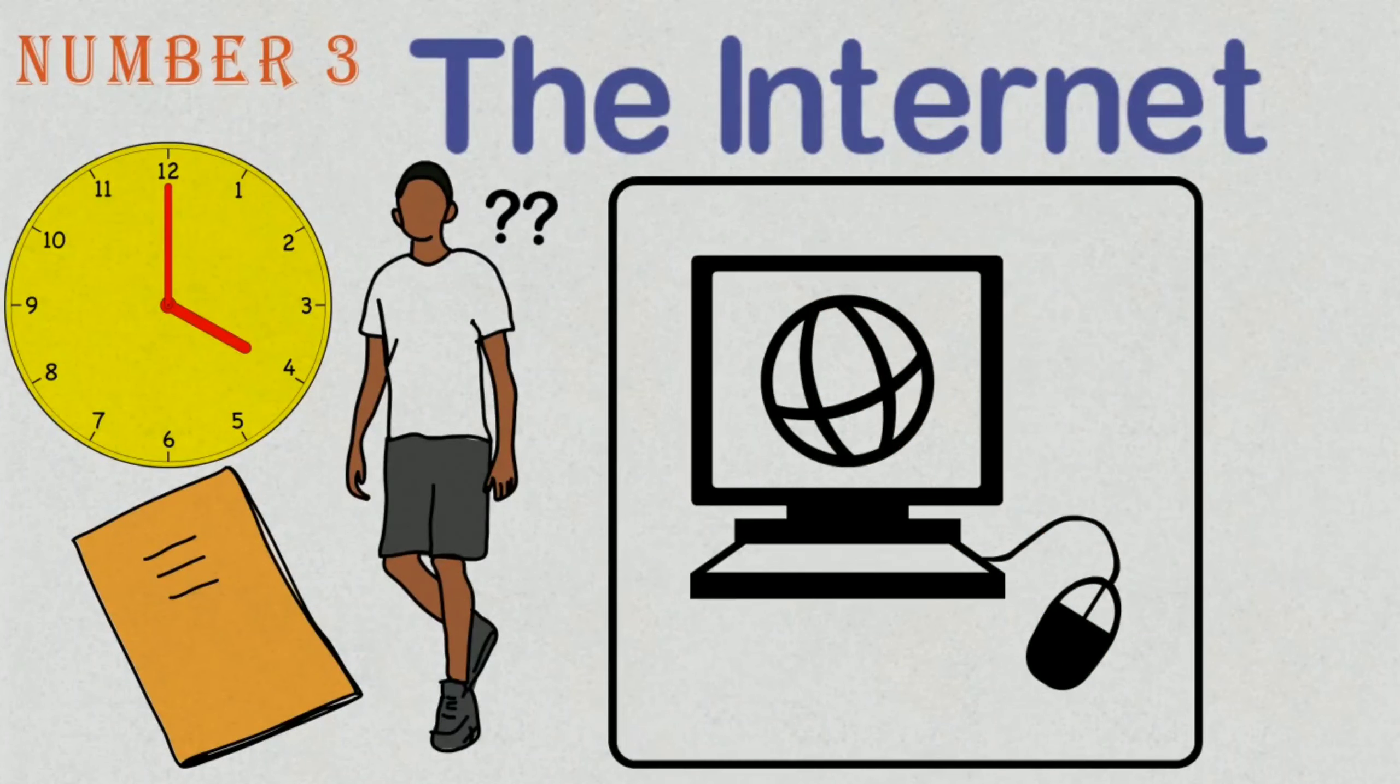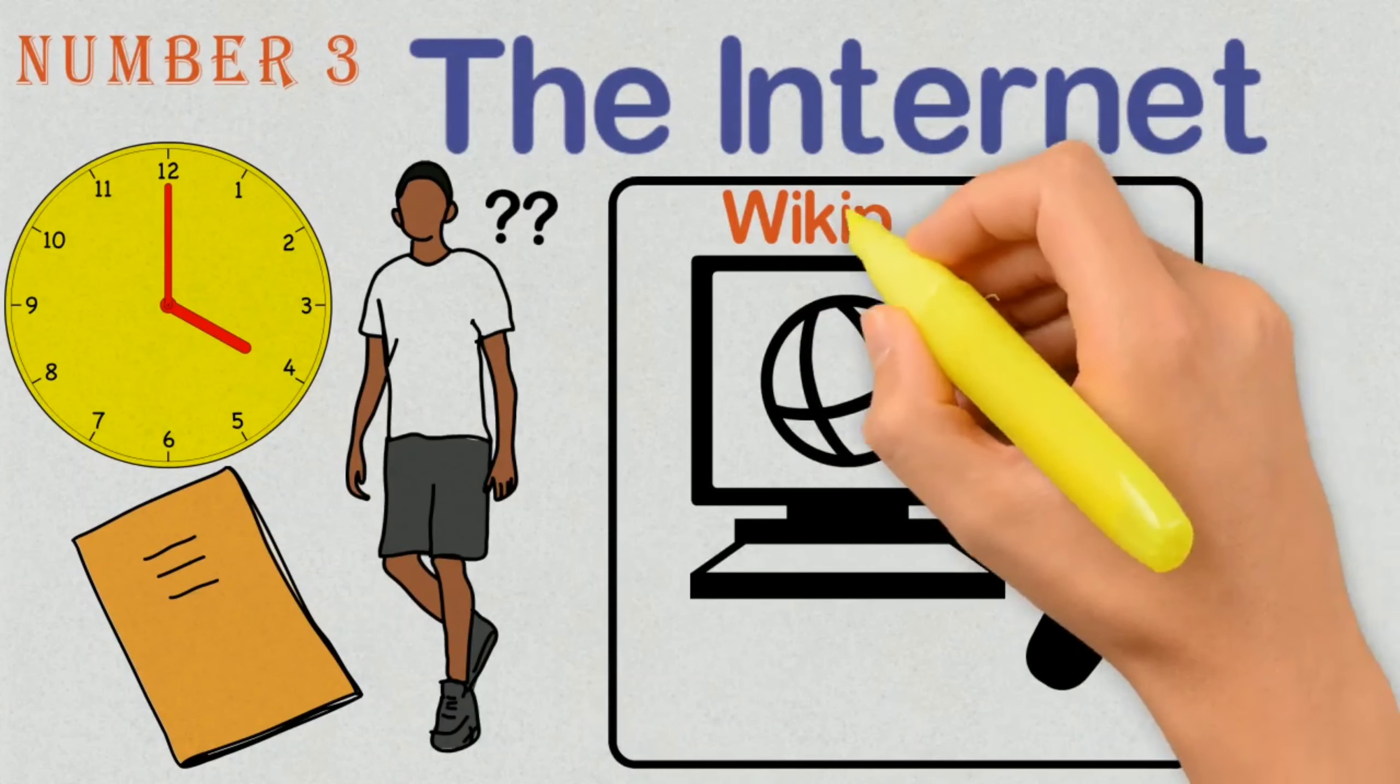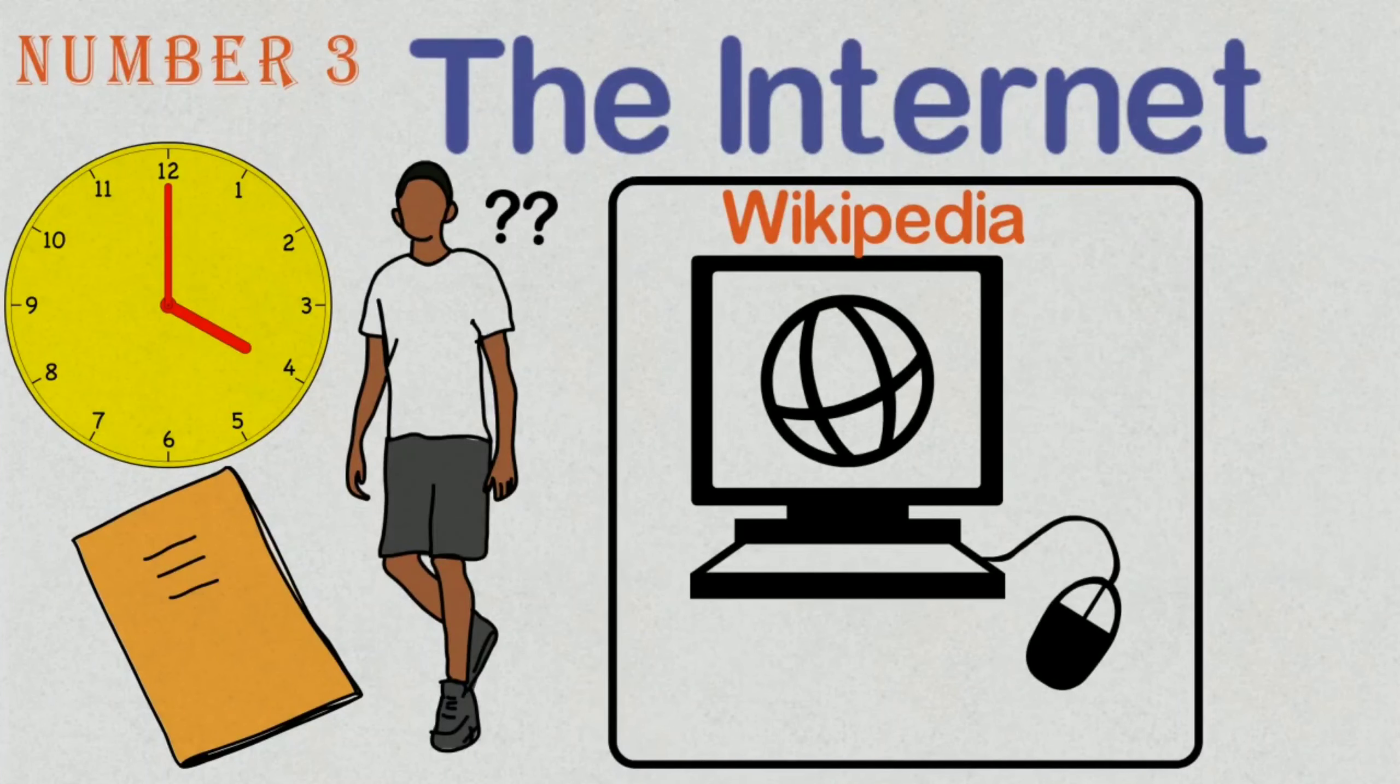So Mike decides to search for additional resources on the internet. He opens a Wikipedia page and finds the info he was looking for. Since he's already there, he decides to quickly check his email before going back to studying. Suddenly it's 9 p.m. and five hours have passed since Mike decided to study, and yet he didn't progress further than the second chapter. And he's still on the internet.